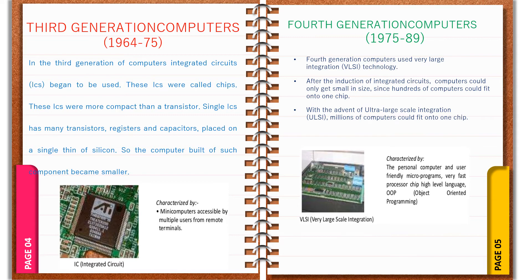Third generation computers were general purpose machines suitable for both scientific and commercial applications. Their maintenance cost was very less compared to earlier computers. Advantages include: smaller in size, better speed, more reliable, less heat production, easily portable, less expensive, increased commercial production, good storage, and low maintenance cost due to rare hardware failures. Disadvantages include: air conditioning was still required in many cases, and highly sophisticated production was very tough and costly.